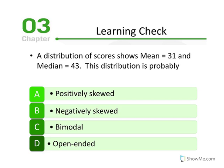A quick learning check: a distribution of scores shows the mean equal to 31 and the median equal to 43. First, we recognize the distribution is definitely not symmetrical, because symmetrical means the mean, median, and mode are all equal. The mean and median are not equal, so we take into consideration the x value of 31 that comes before 43.